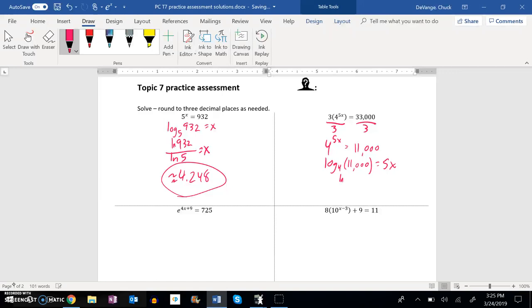So this is going to be, if I use change of base formula, natural log of 11,000 divided by natural log of 4, and divide it by 5, so times a fifth. So I'm going to go a fifth times that.